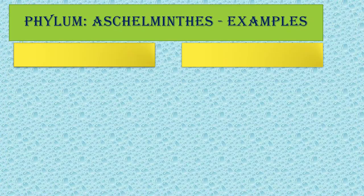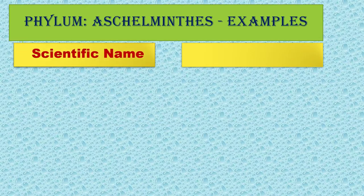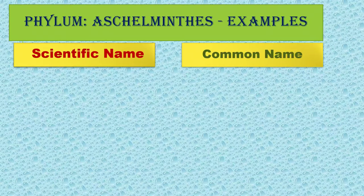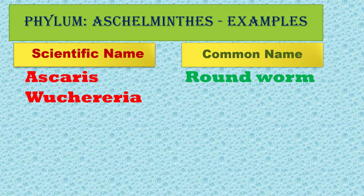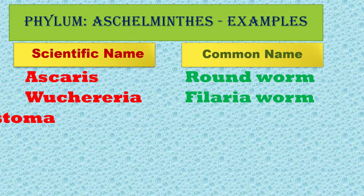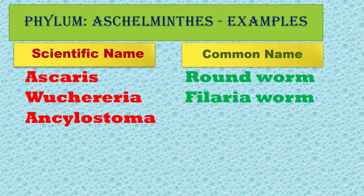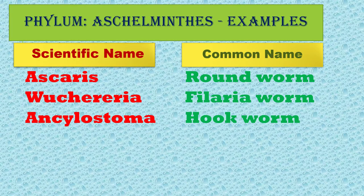Let us see some examples of Aschelminthes with both common names and scientific names, because in NEET exams they sometimes give the scientific name and ask for the common name, or vice versa. Wuchereria is the scientific name and filarial worm is the common name. Ancylostoma is the hookworm. Enterobius is the pinworm.